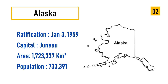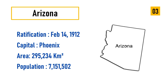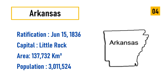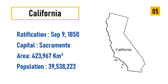Alaska population 733,391. Number three: Arizona, ratification February 14, 1912, capital Phoenix, area 295,234 square kilometers, population 7,151,502. Number four: Arkansas, ratification June 15, 1836, capital Little Rock, area 137,732 square kilometers, population 3,011,524.